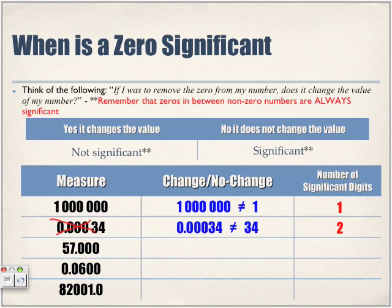For 57.000, if we remove those trailing zeros, do we have the same value? Yes — 57.000 is equal to 57. So the value does not change when we remove them. Therefore, those zeros are significant. How many significant digits are in 57.000? Five.